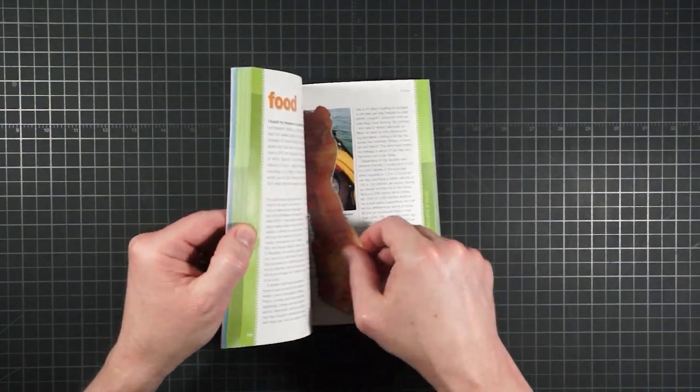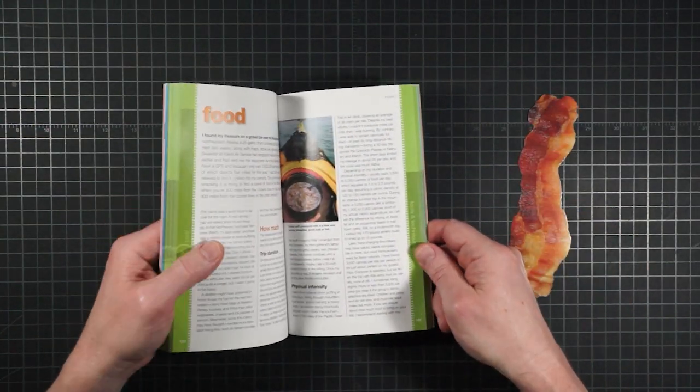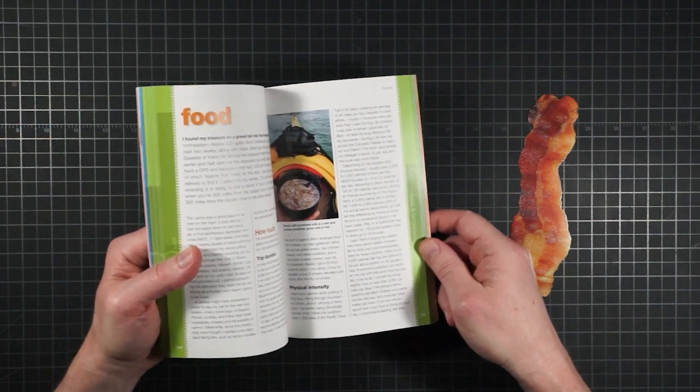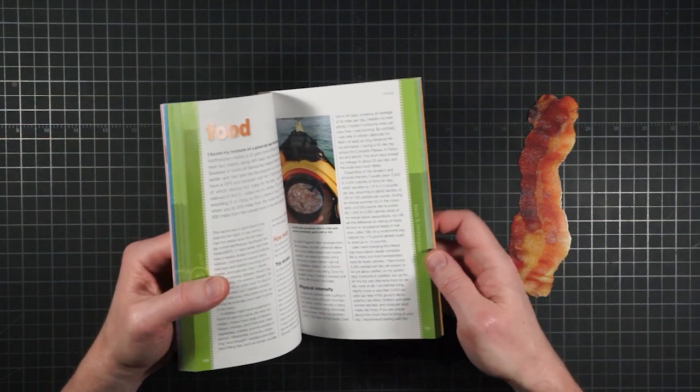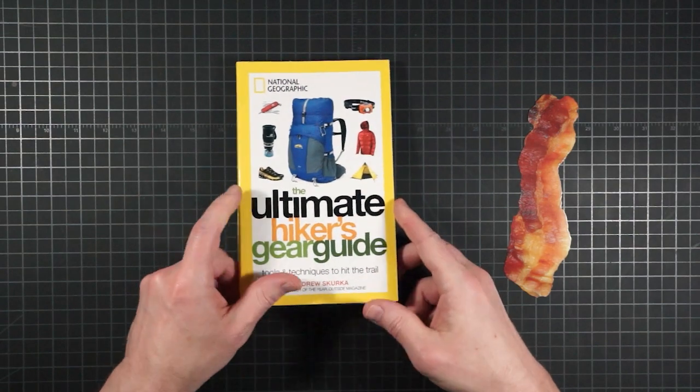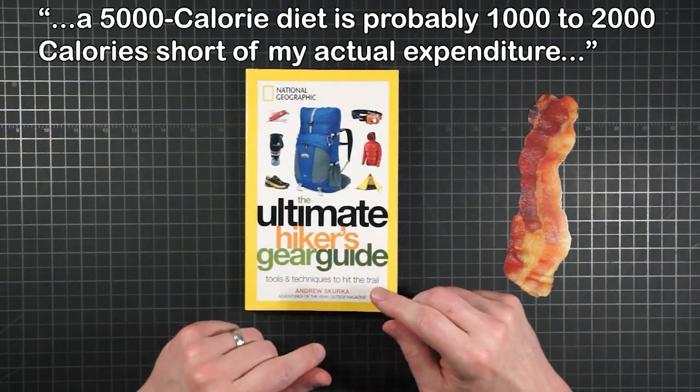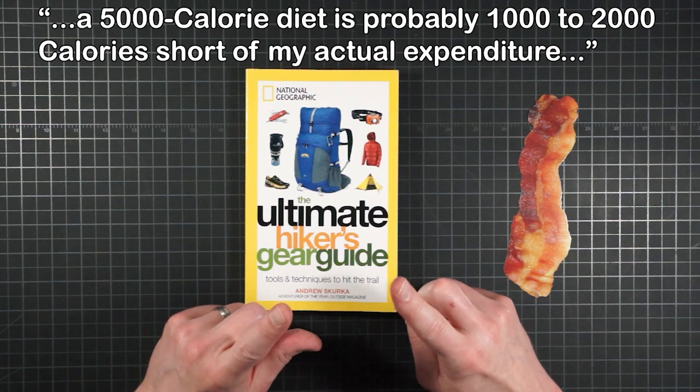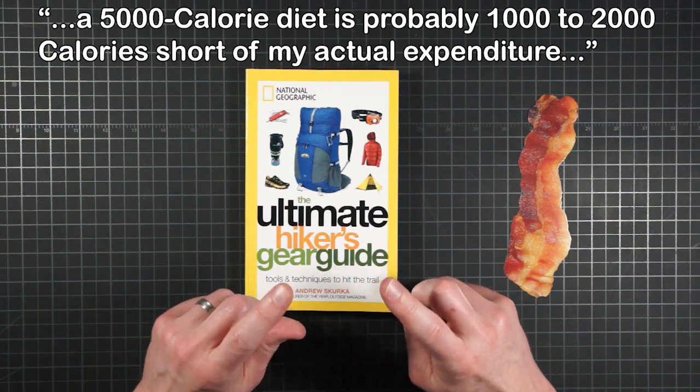In his book, he states that he usually packs between 3,500 and 5,000 calories of food per day. However, he admits that for an intense summer day in the mountains, a 5,000 calorie diet is probably 1,000 to 2,000 calories short of my actual caloric expenditure.